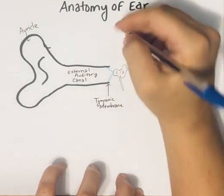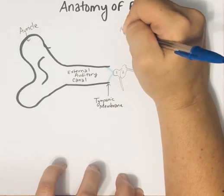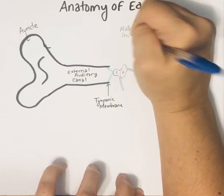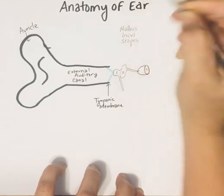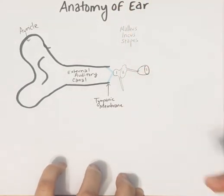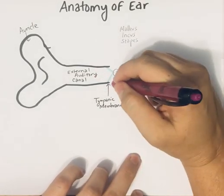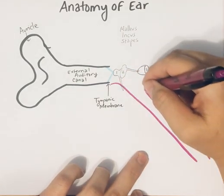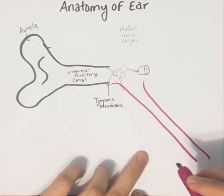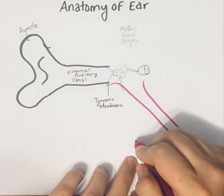The three auditory ossicles are: the malleus — one, the incus — two, and the third is the stapes, which looks like a stirrup. These are all part of the middle ear. Your middle ear is also connected to your pharynx through what we call the pharyngotympanic tube.